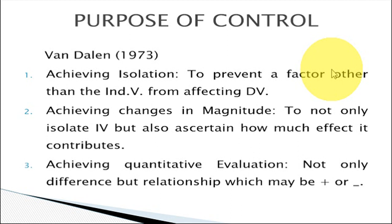Number two, to achieve changes in magnitude. During experimental research, whatever changes happen in the independent variable, that impact can be seen in the dependent variable. So, not only to see the change, but also to see how much impact or effect the independent variable has on the dependent variable — to ascertain how much effect the independent variable contributes to the dependent variable — is also one of the reasons controls are done in experimental research.